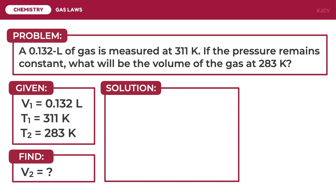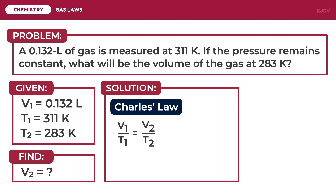We need to identify what gas law is involved in this situation. Since there are changes in the volume and temperature of the gas, and the pressure is not mentioned — thus it is considered to be kept constant — this is governed by Charles' law, which is mathematically written as V1/T1 = V2/T2. Since we are solving for the final volume, we derive the formula: V2 = (V1 × T2) / T1. This is done by cross-multiplying and isolating V2 by dividing both sides by T1.